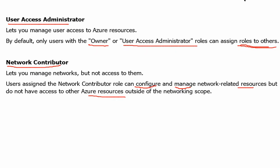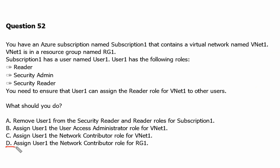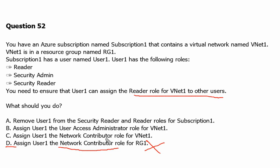Now we will go through the options available. Option D is to assign User 1 the Network Contributor role. As we know, Network Contributor can configure and manage network-related resources, but our objective is to provide the Reader role to other users, so this will not work. Option C is to assign User 1 the Network Contributor role on vNet1. Whether on the resource group or the resource itself, it will not help grant permissions to other users — it only helps manage or configure the network resource.